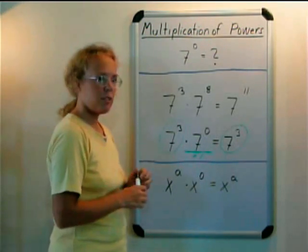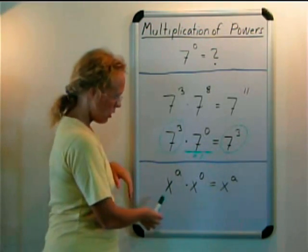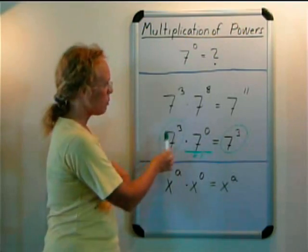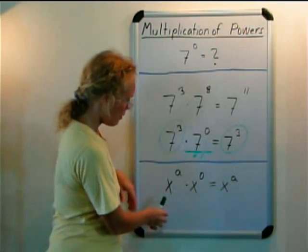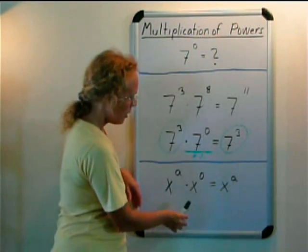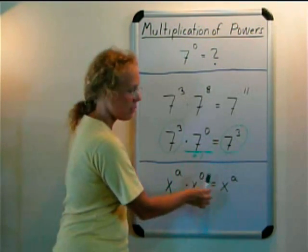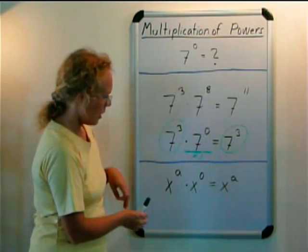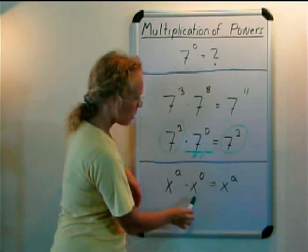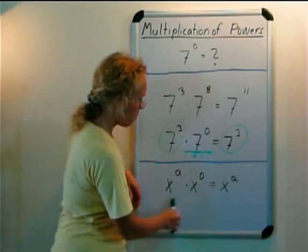And if your students are to that level, then by all means use variables also instead of specific numbers. And have x to some power and then x to the 0th power. And when you're adding the exponents, a plus 0 is a. And therefore this here, it must equal 1 because you have the same number here and here.